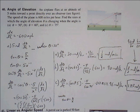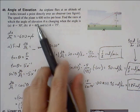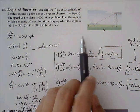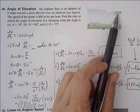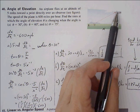Let's walk through a couple more trig related rates problems. Number 40: angle of elevation. An airplane flies at an altitude of 5 miles towards a point directly over the observer.